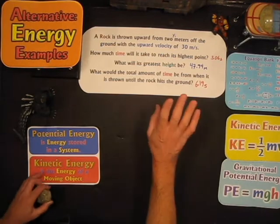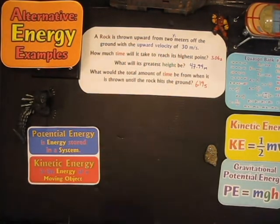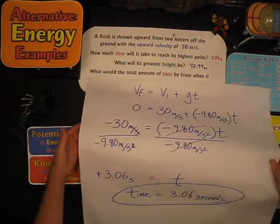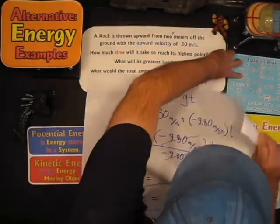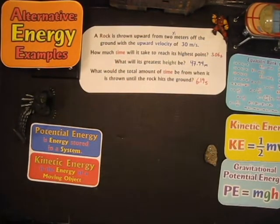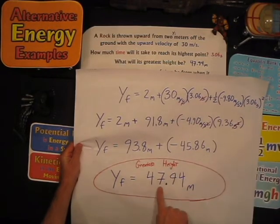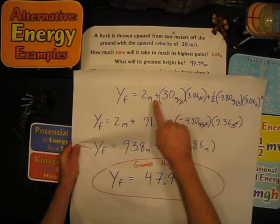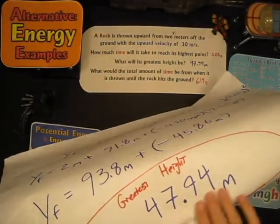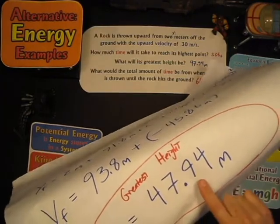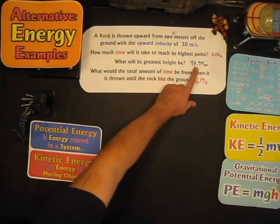The problem started as: a rock is thrown upward from 2 meters off the ground with an upward velocity of 30 meters per second. We had three questions: how much time does it take to reach its highest point, what will its greatest height be, and what would the total time be from when thrown until it hits the ground? We already did this problem. But I want to show you could do at least some of it another way. The energy equations don't have time in them, so we'll just solve for the height.